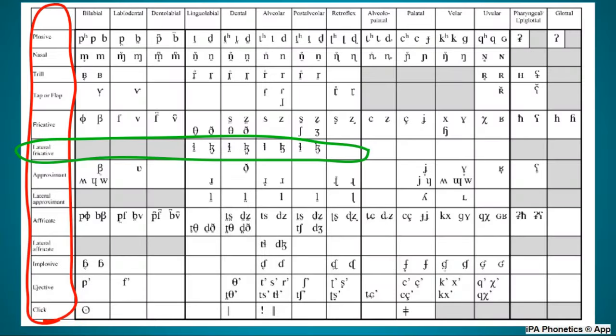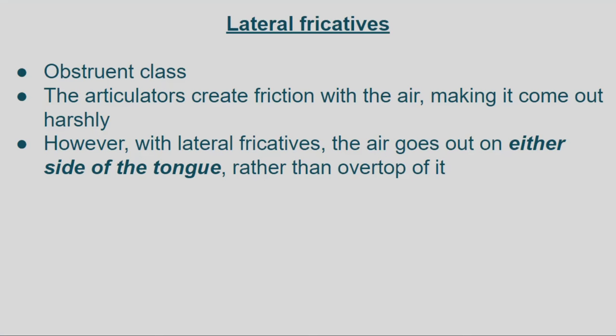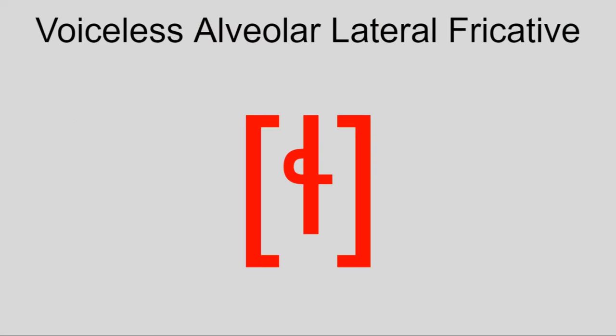Along with that, there are also lateral fricatives, which are basically just fricatives but the air comes out on either side of the tongue, not directly over it. The main two are ɬ and ɮ.